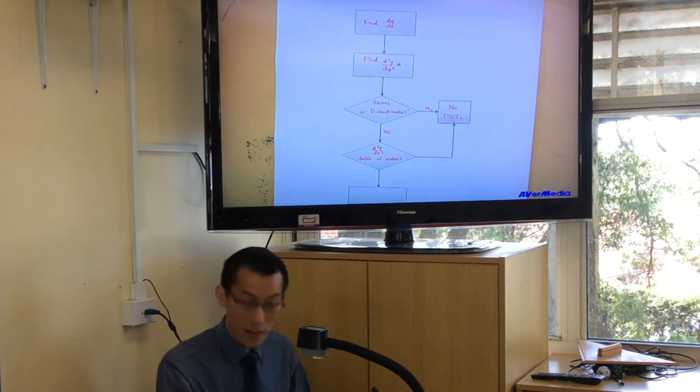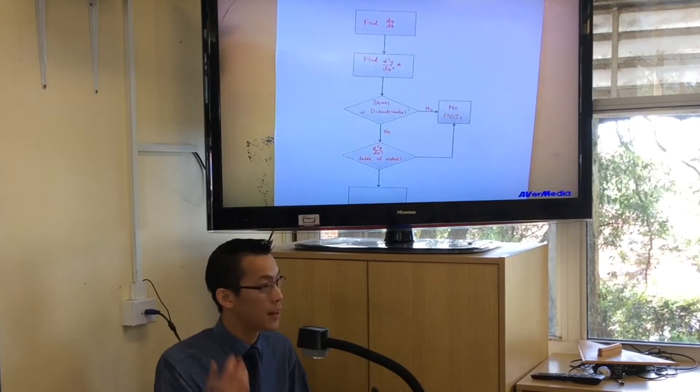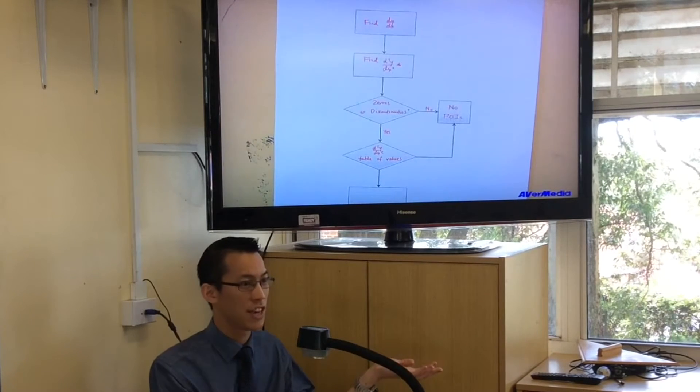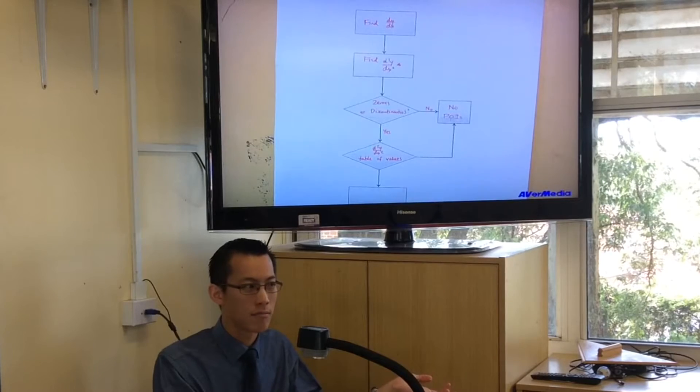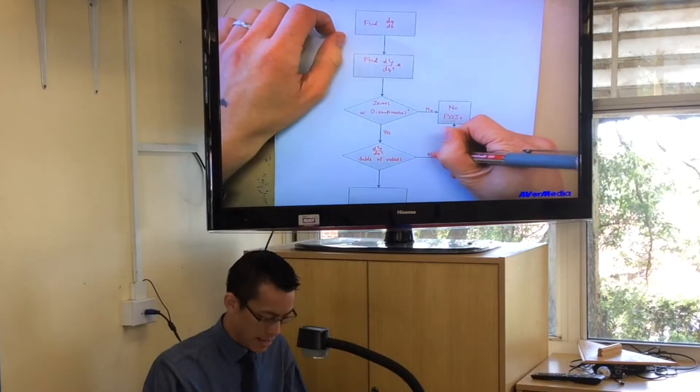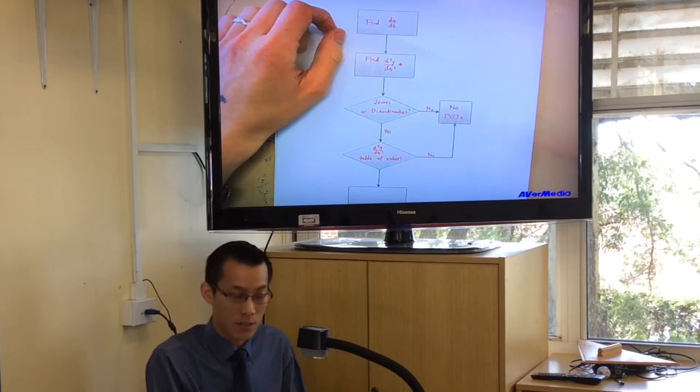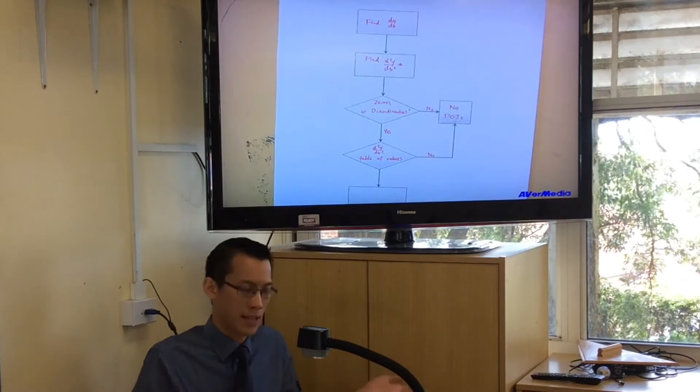Now, after this table of values, one of two things will happen. I will either see a change in the side or I will not see a change in the side. What happens if I don't see any change in the side? If I don't see any, then I go back to here, there are no points of inflection. I found places where the second derivative is zero but it doesn't mean anything, just like x to the fourth.